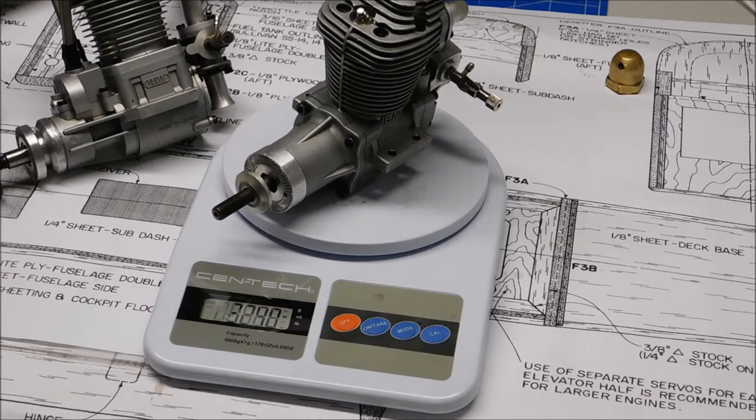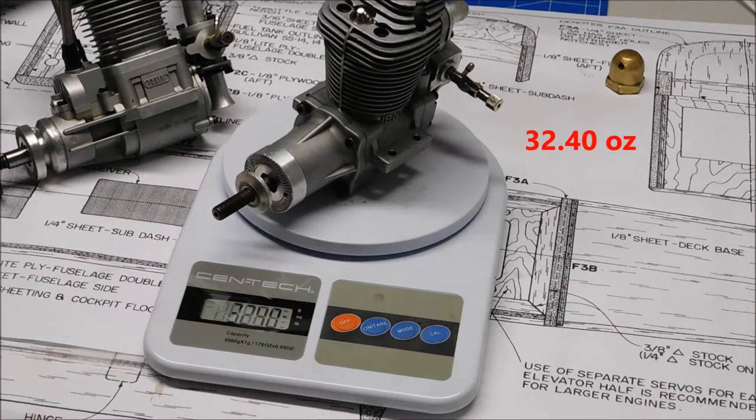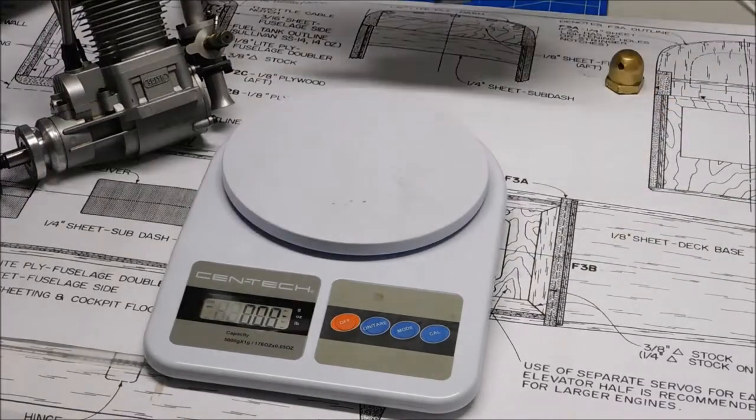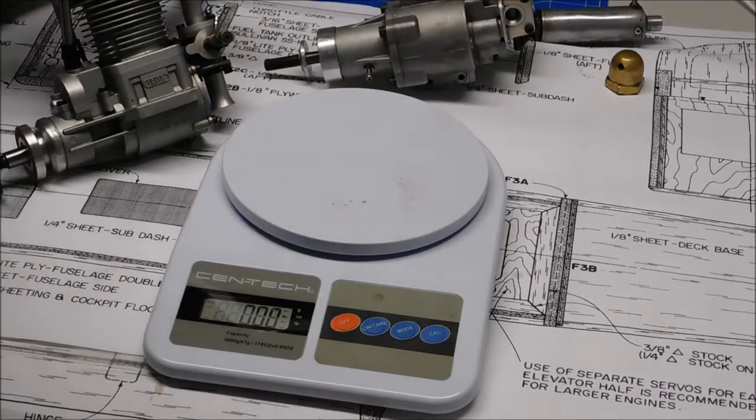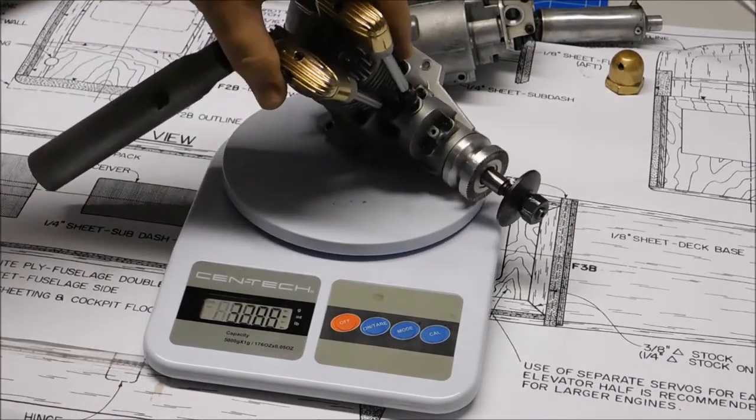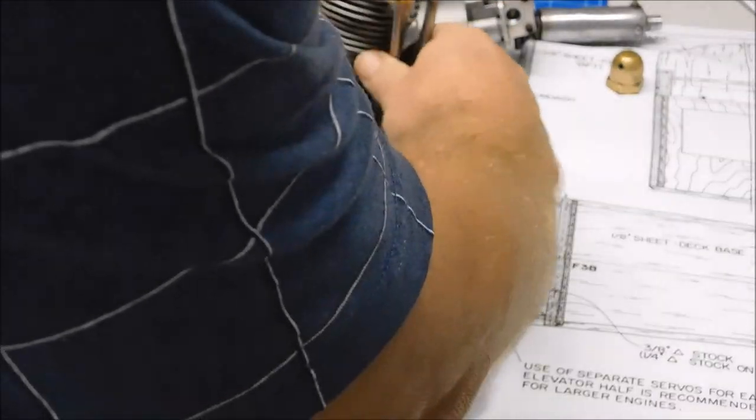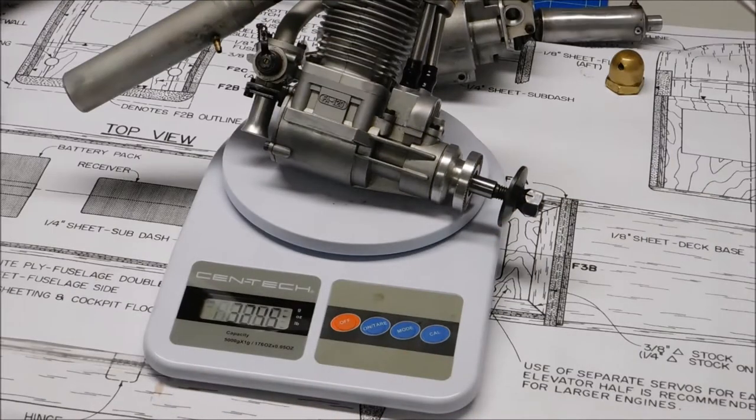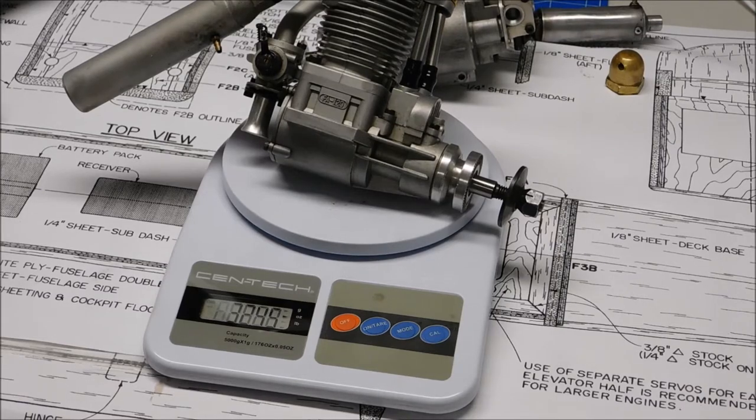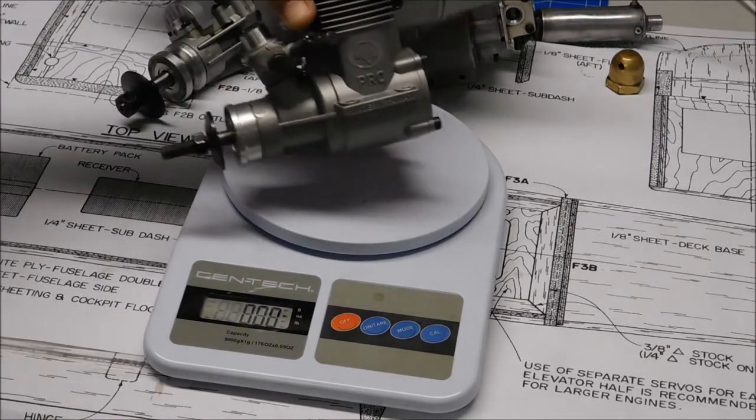So this Enya 120, can you read that? I think you can read that, 32.40 ounces. Let's put the Sato on here again. Make sure that that muffler isn't touching. Wow, look at that, 32.45 ounces.